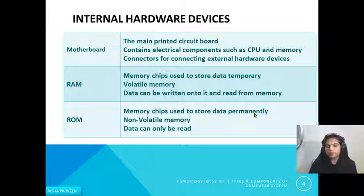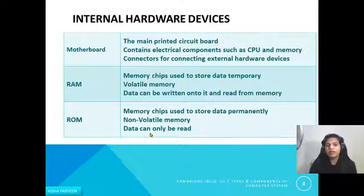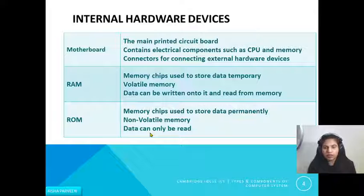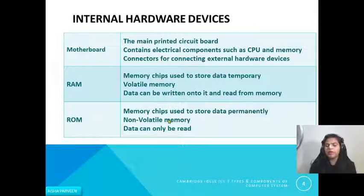On the other hand we have ROM, which is used to store data permanently. It is non-volatile memory — when you turn off your computer the data in ROM will not be lost; it remains as it is. Data in ROM can only be read, unlike RAM which is read and write memory. Instructions stored in ROM include things like the boot sequence that loads the operating system when you press the power button. These instructions are needed frequently and permanently, so we do not change them.